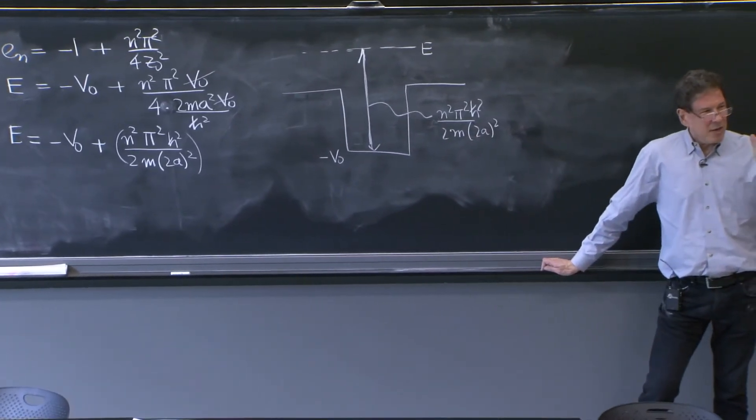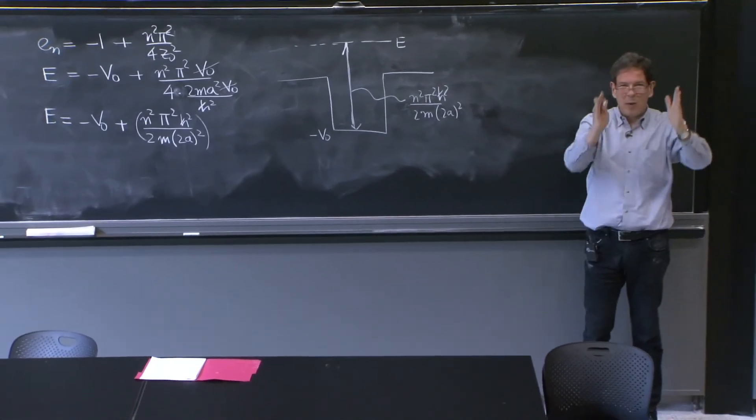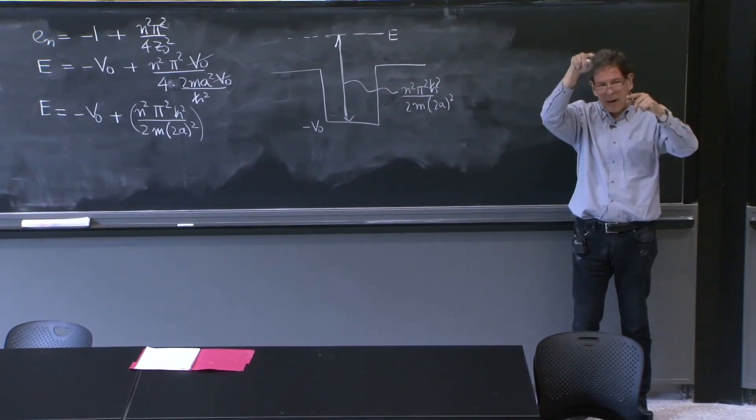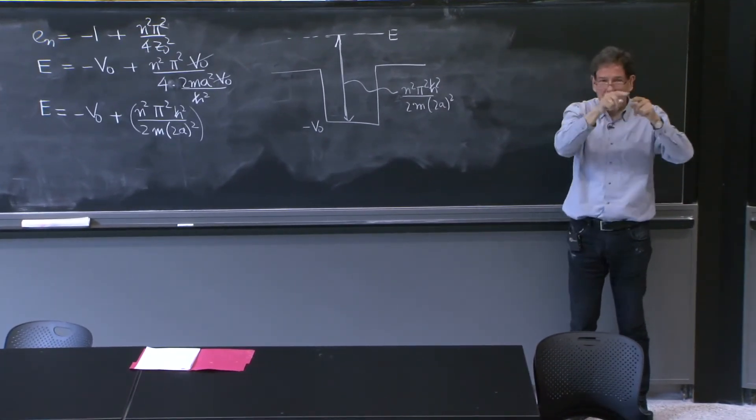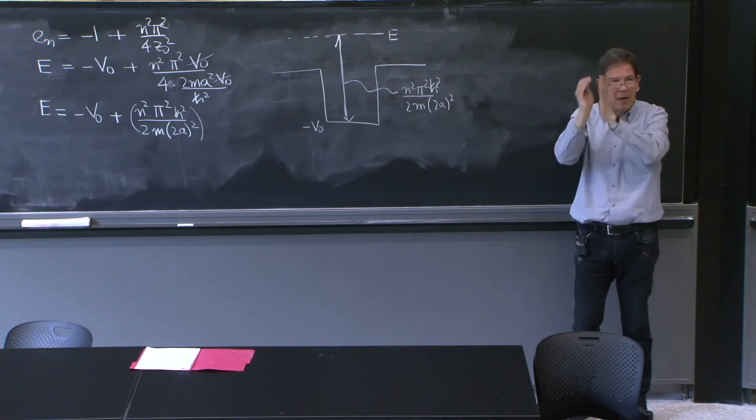These are the energy levels of an infinite square well of width 2a. If you remember, the energy levels of an infinite square well are n squared, pi squared, h squared, over 2m times the width squared.